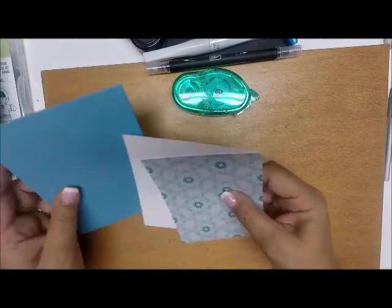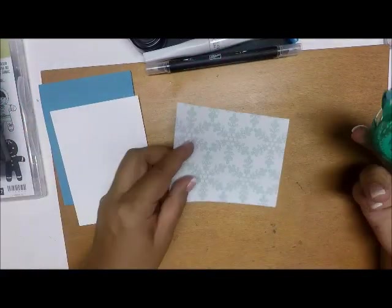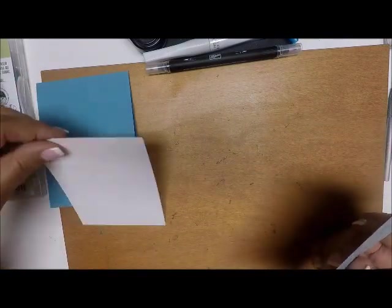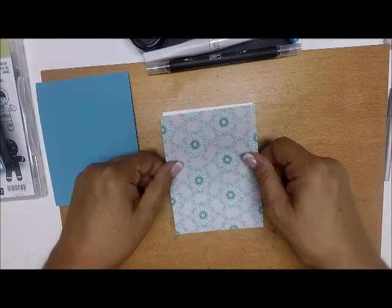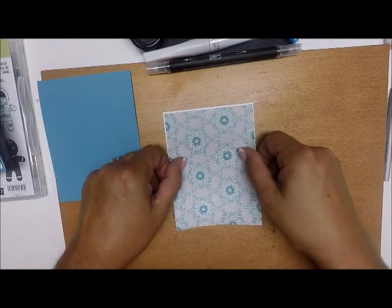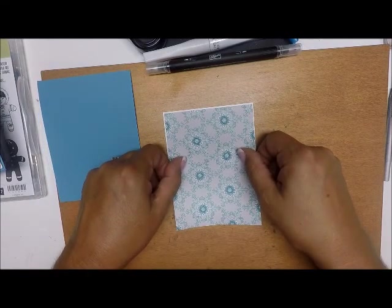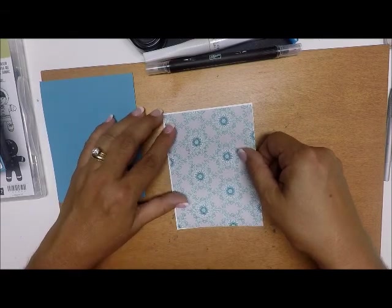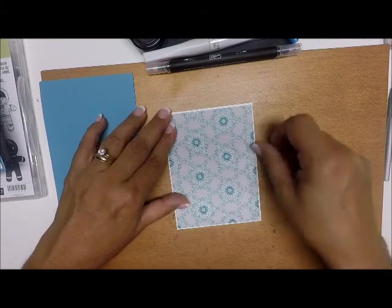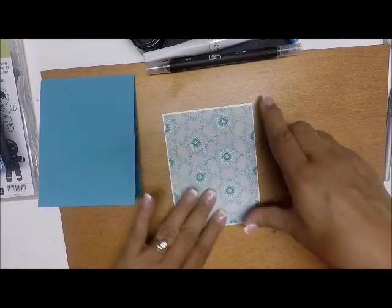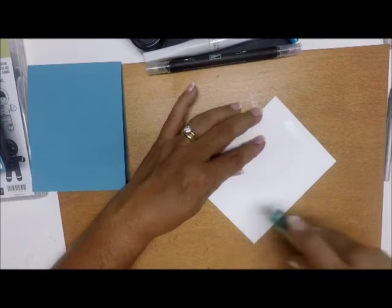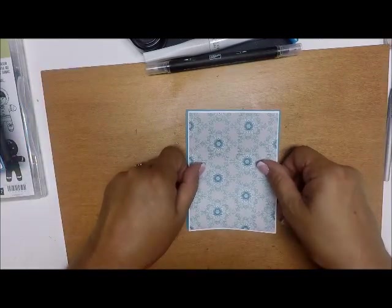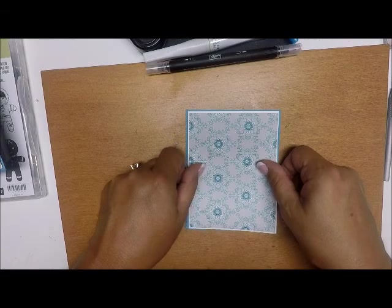The first thing we're going to do is layer all three of our pieces together and we're going to use the repositionable tape for that. That is very important, otherwise when you take these layers apart to assemble the card you are going to rip or tear your paper. You don't need a whole lot, just enough to keep your papers together while you do your die cutting.